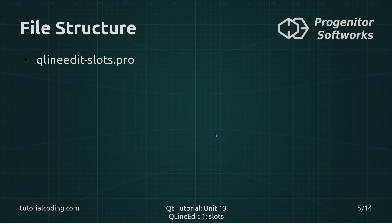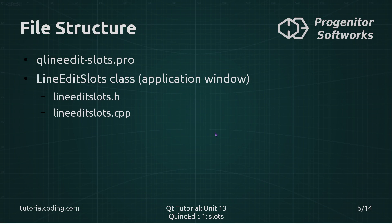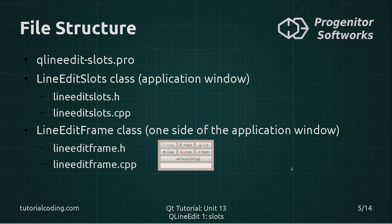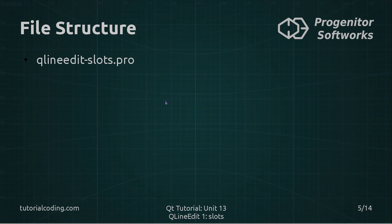The file structure of the project looks like this. It has a project file. It has a main window class which only contains the two frames. And it has a frame class, which is one half of the application — it provides a button for each of these slots, a line edit, and all the real code in the sample application.